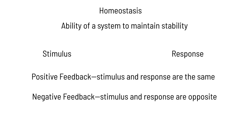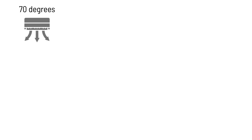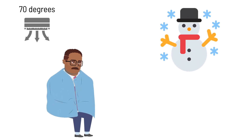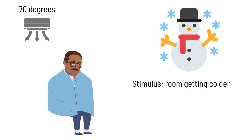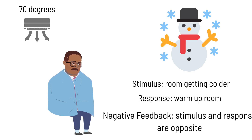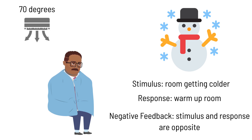The thermostat is a good example of how feedback works. Let's say the thermostat is set at 70 degrees and the temperature drops outside. The room gets colder and the thermostat senses this. The response is to turn on the heat and warm up the room. The stimulus — room getting colder — is opposite to the response of room warming up, so this is negative feedback.